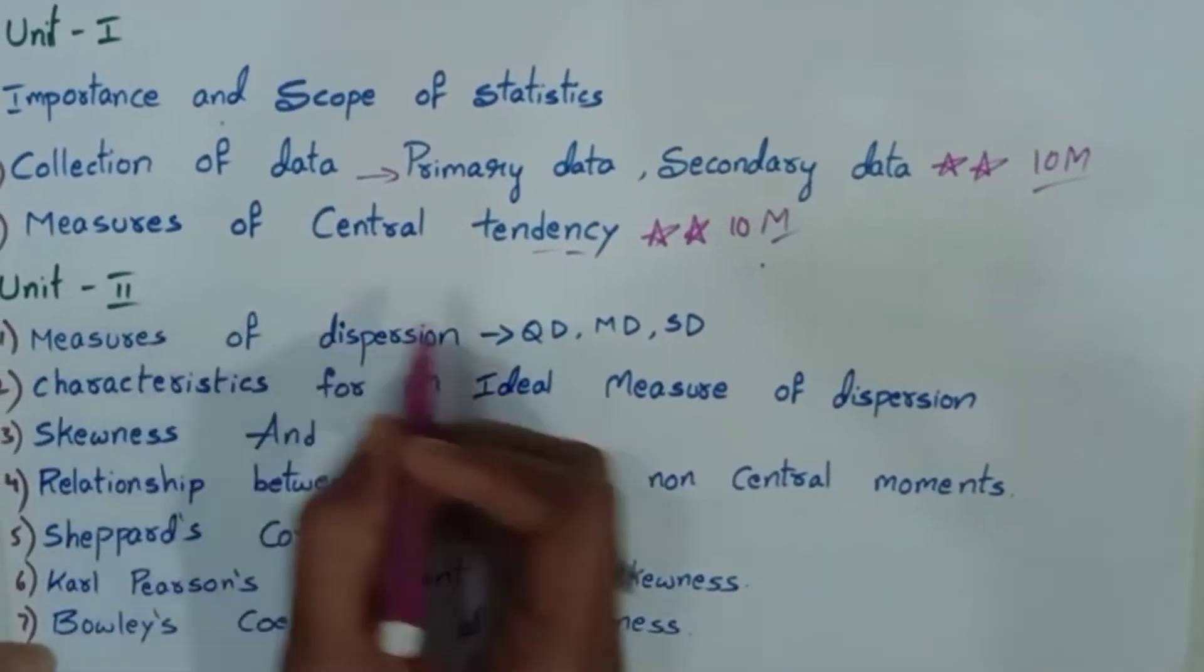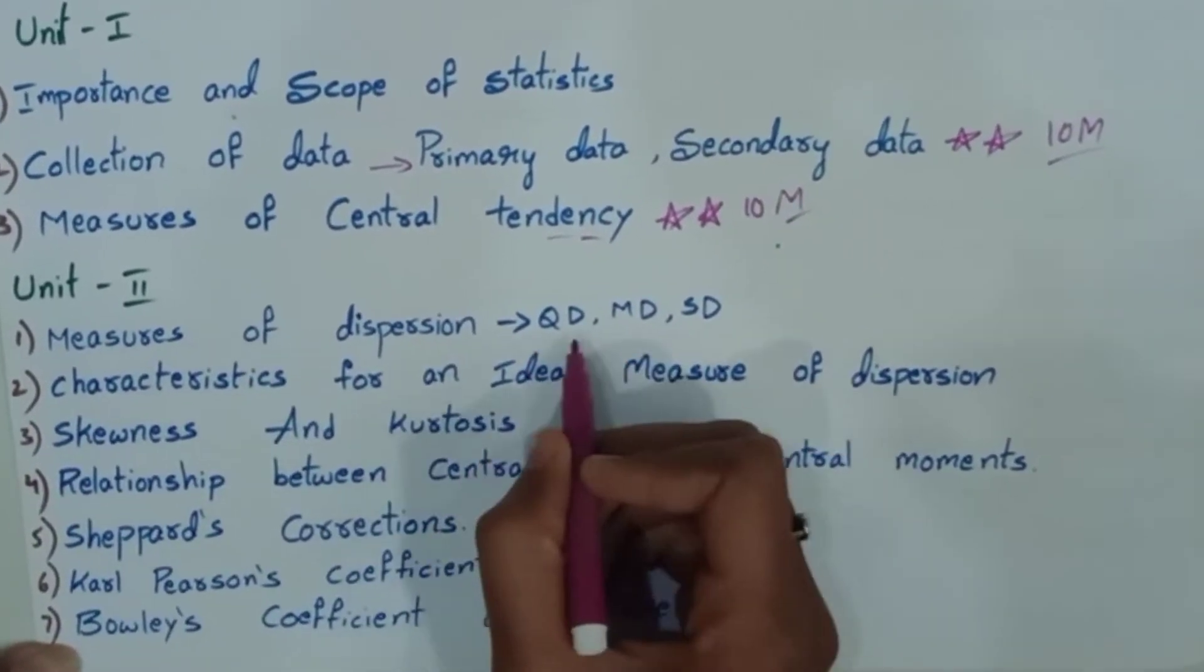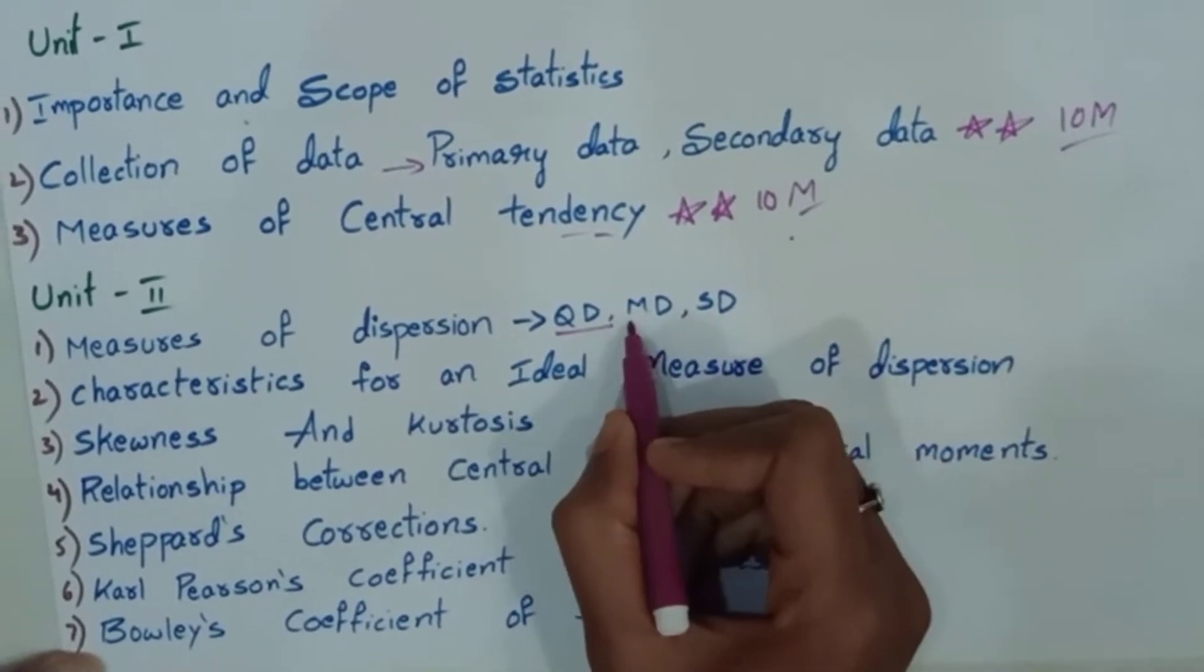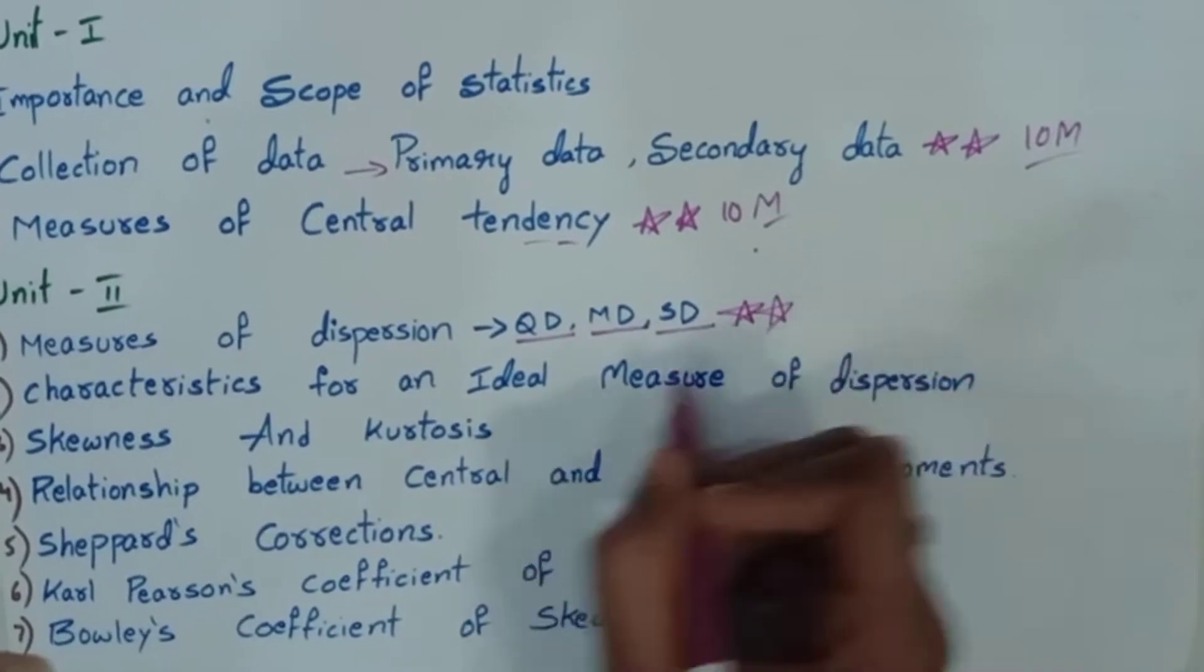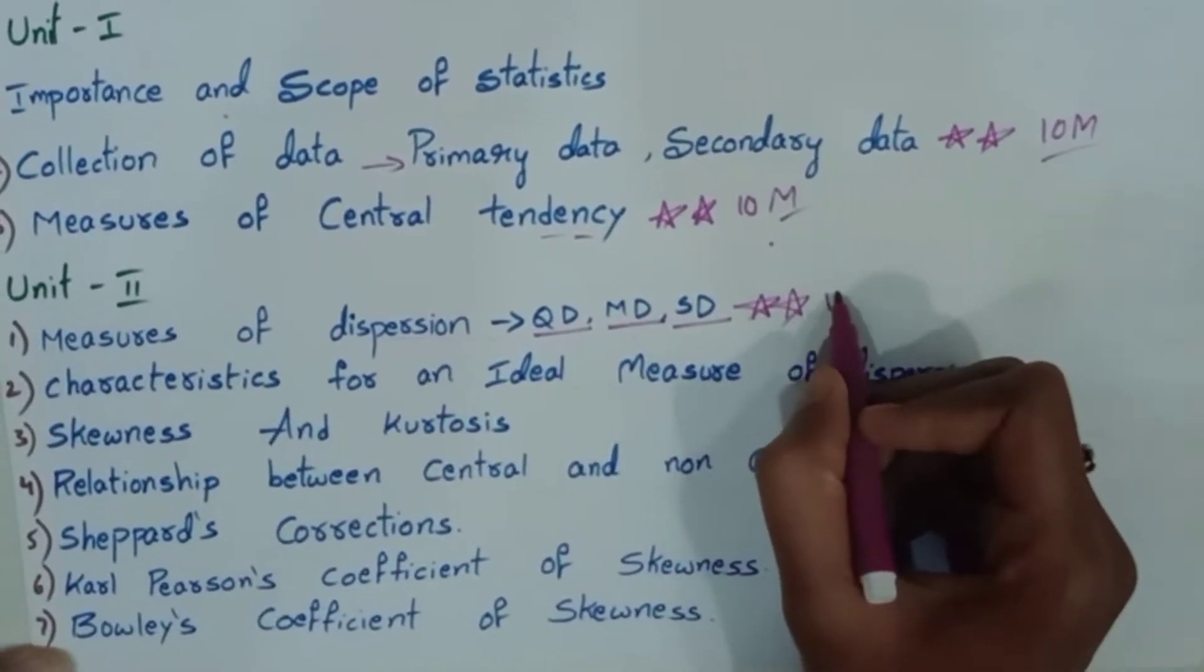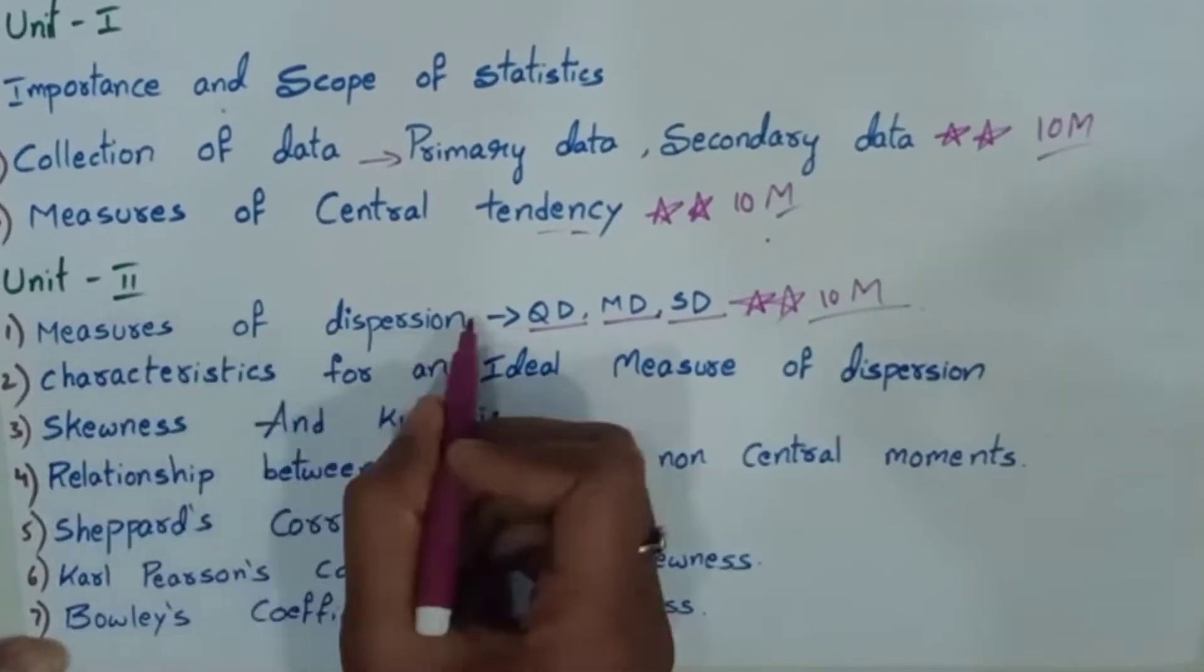Next, unit 2, measures of dispersion. In this video, quartile deviation, mean deviation, standard deviation. This is a very important question. Measures of dispersion loss. It is very very important for 10 marks. Confirm 10 marks question.